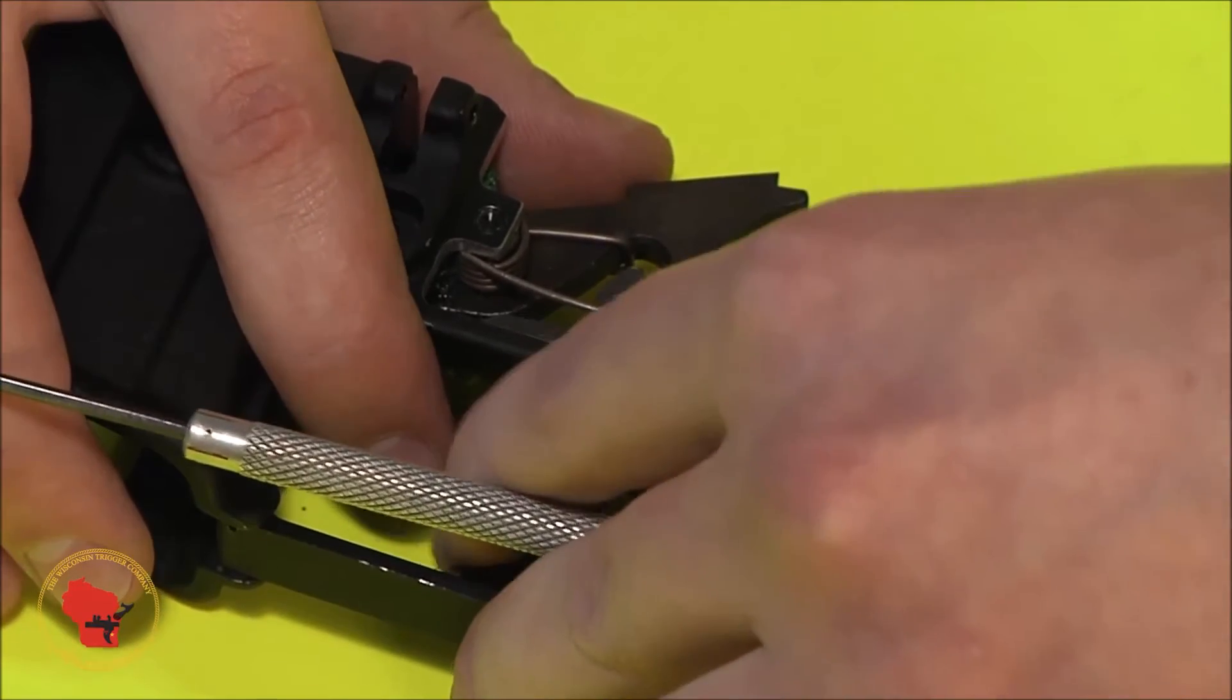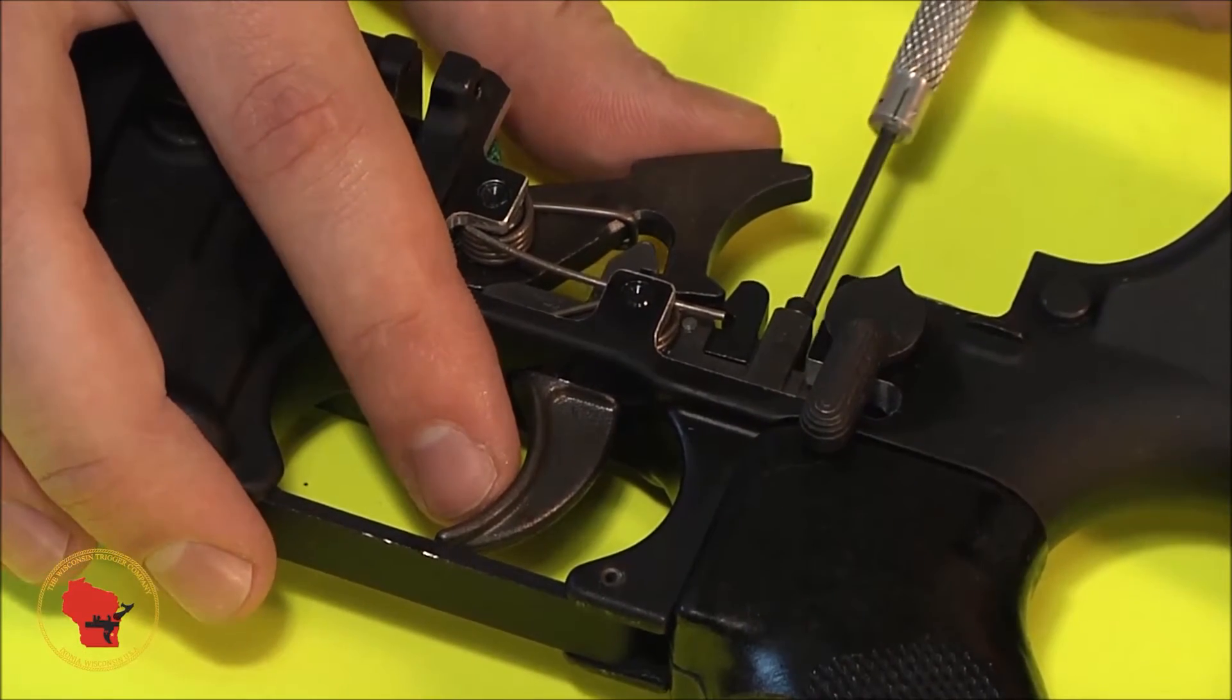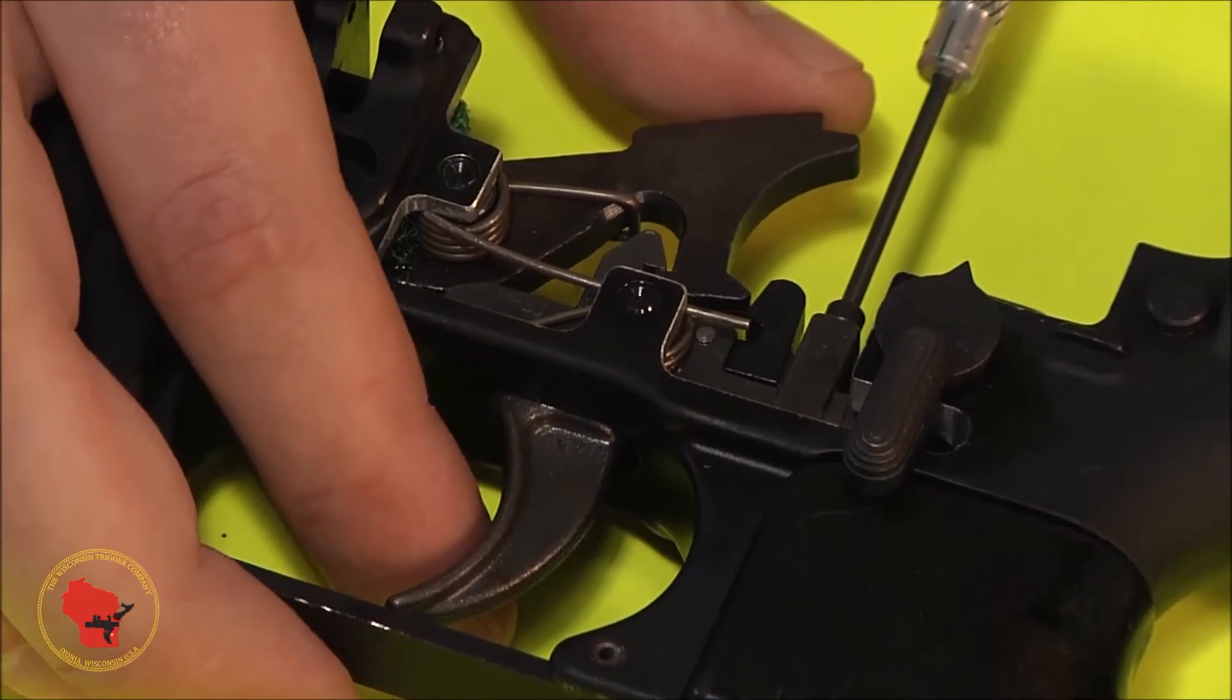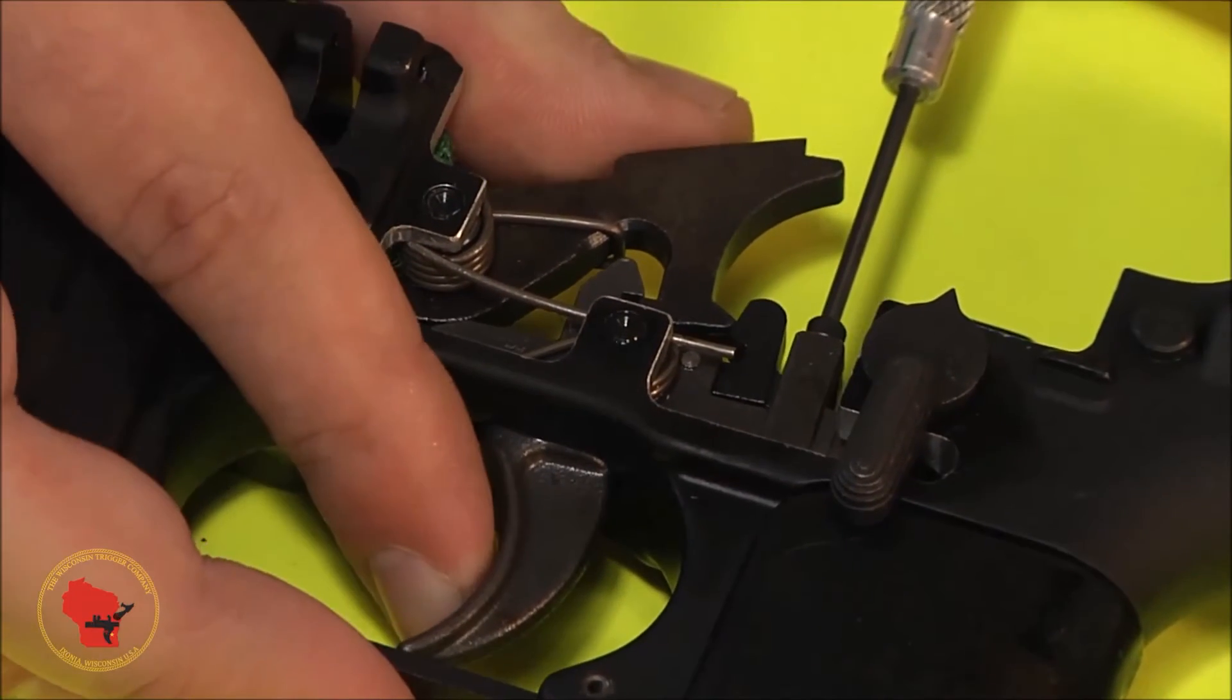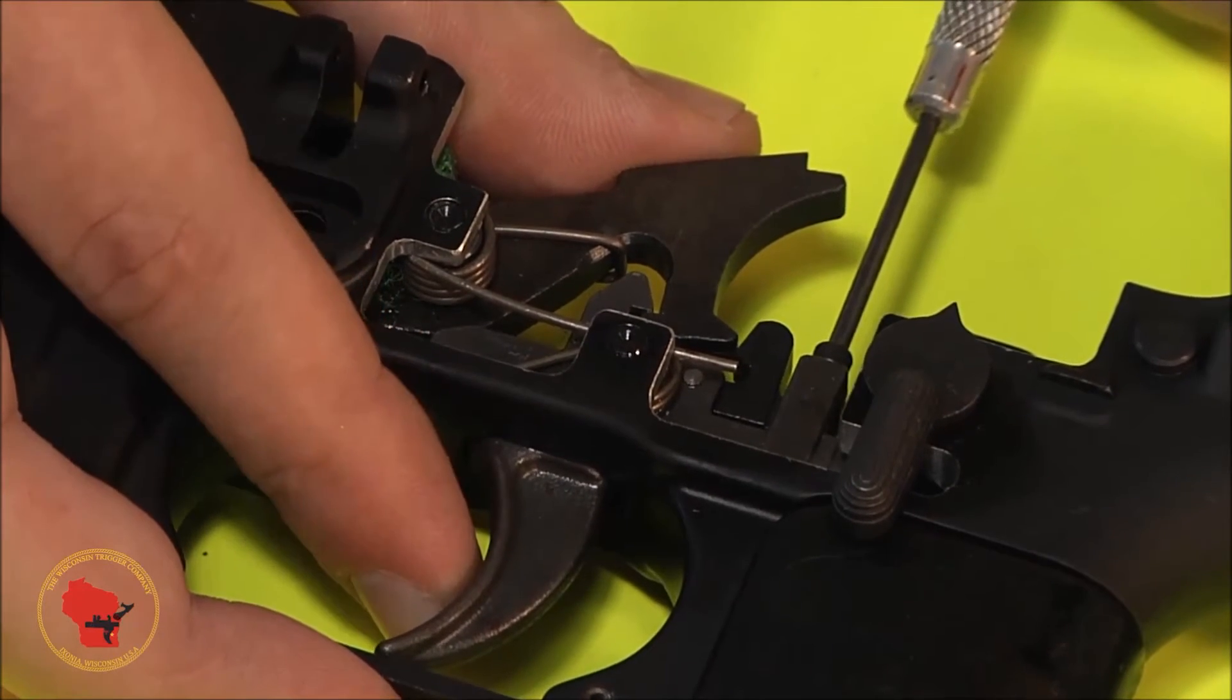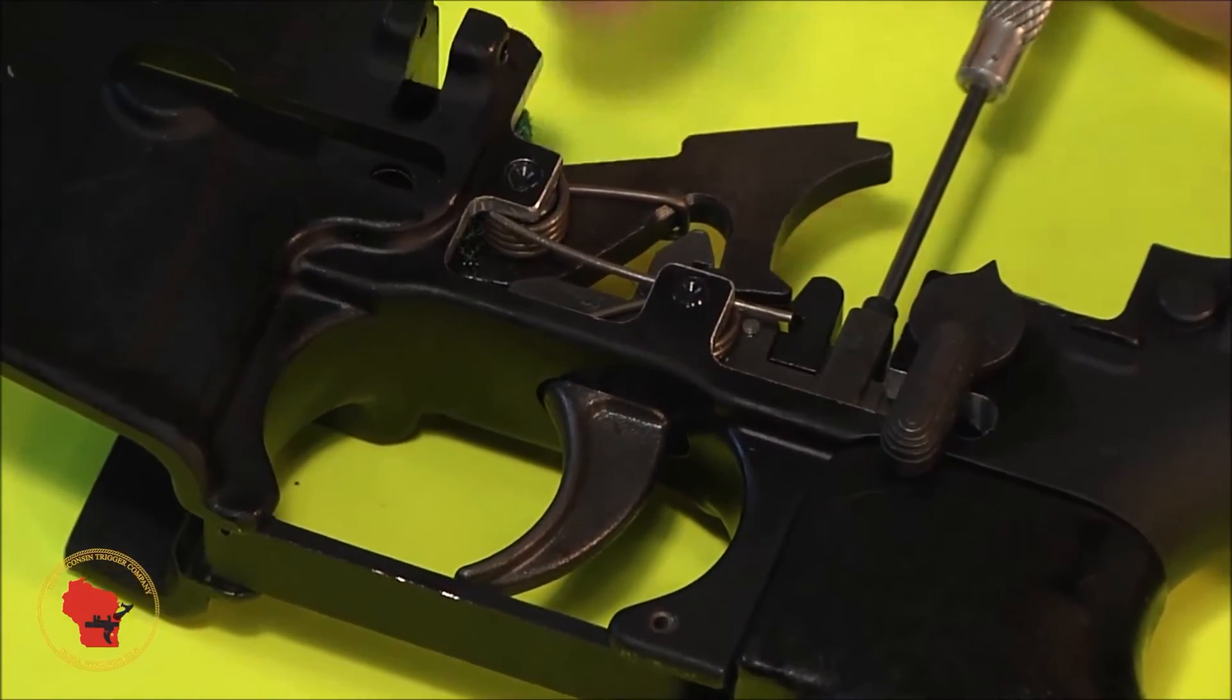As you can see, it's already got some engagement there. It's coming up against the wall. What we want to do is turn this screw in until that is eliminated. Do it a little bit by little bit. And you're going to be able to visually check and see how close you are to that point.